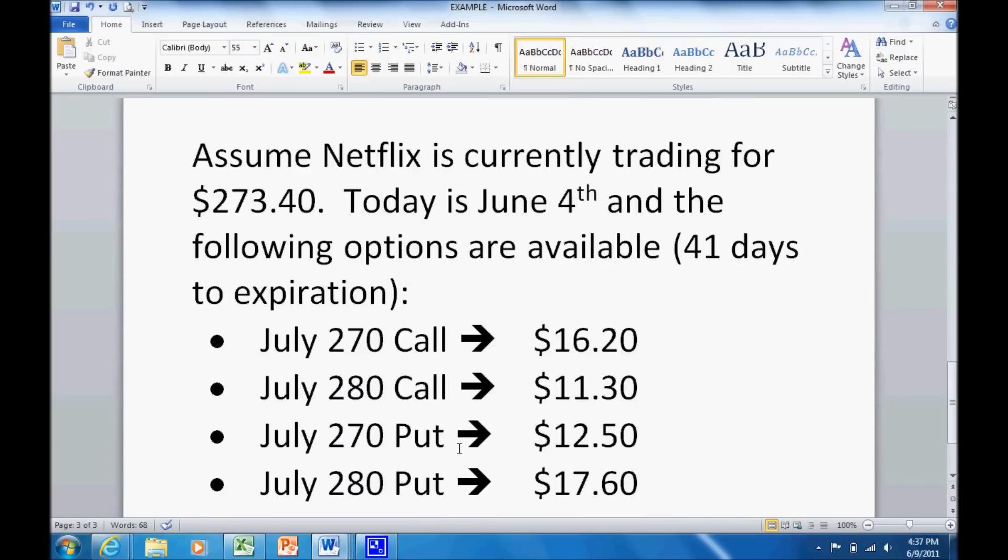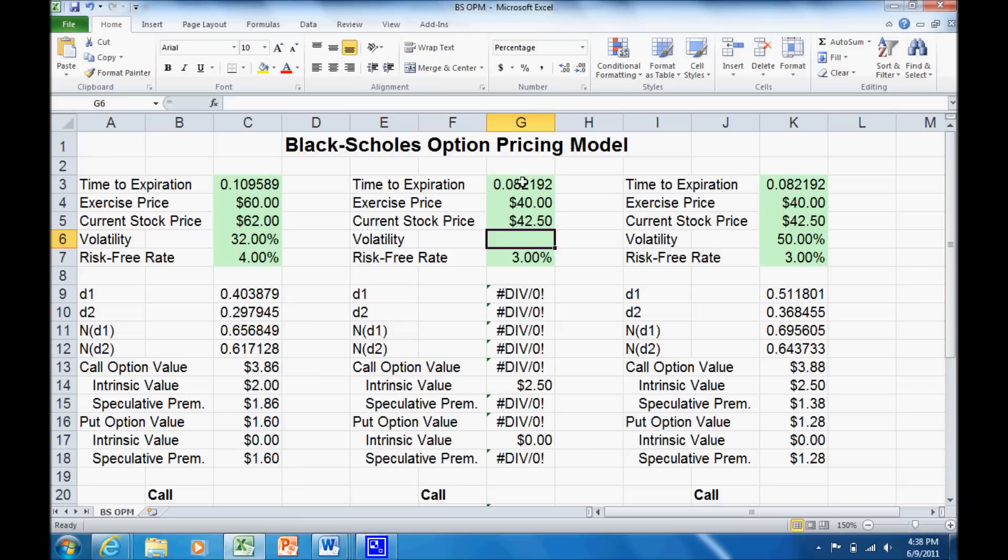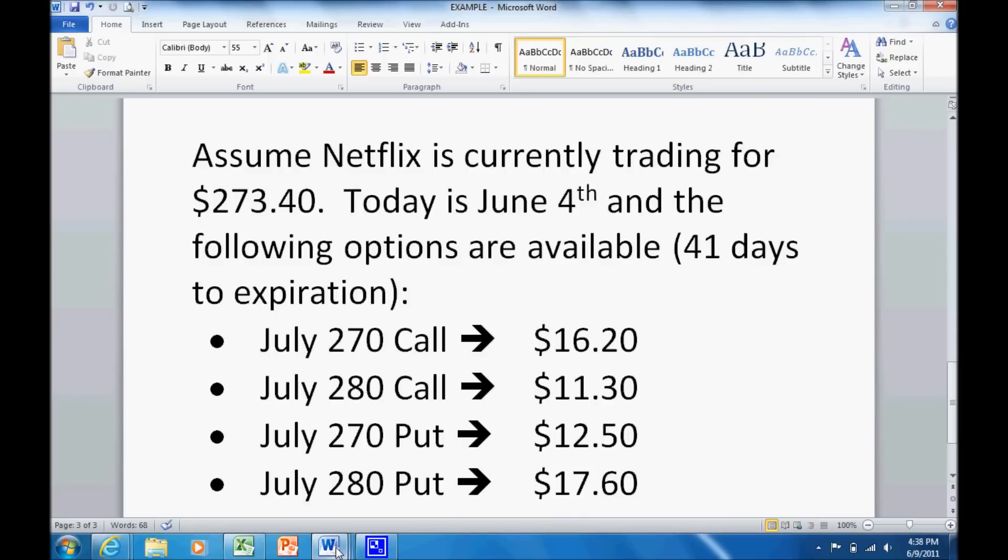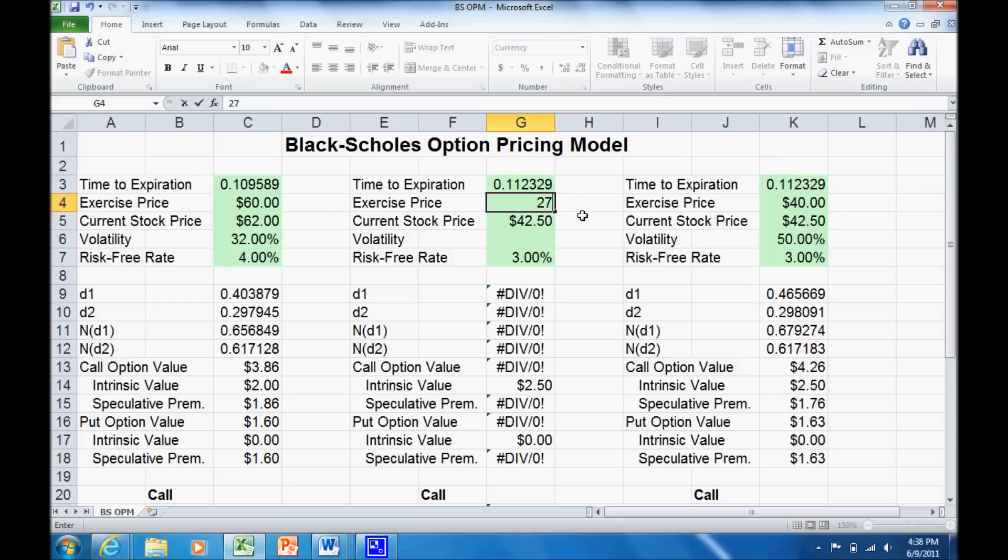So let's pretend Netflix is currently trading for $273.40. In our example, let's assume it's June 4th and we're looking at a series of July call and put options. We want to figure out what the implied volatility is. So we're going to set that up. July 270 call options, we've got 41 days to expiration as of June 4th. So the first thing we need is the time: 41 days out of 365. We've got two columns because I'm going to look at two different strike prices. Our strike prices from our example are 270 and 280.